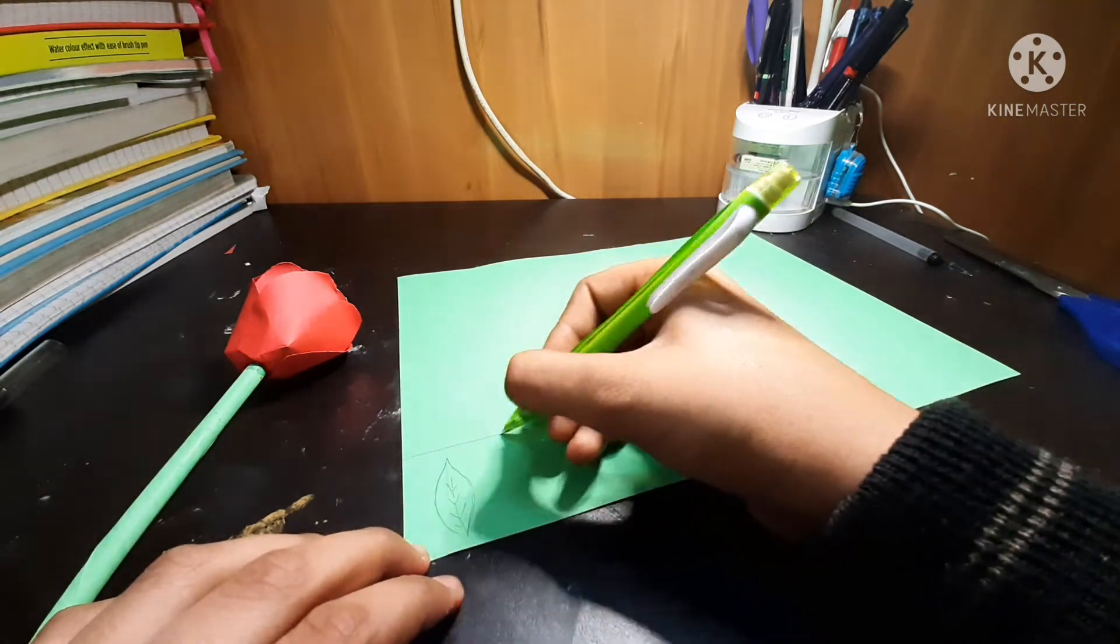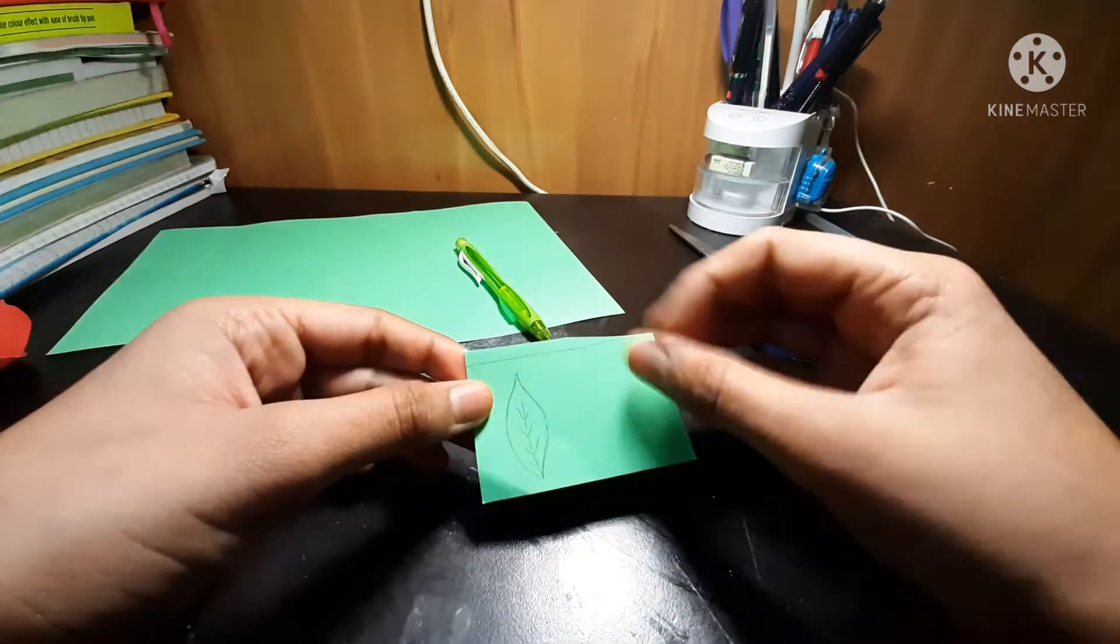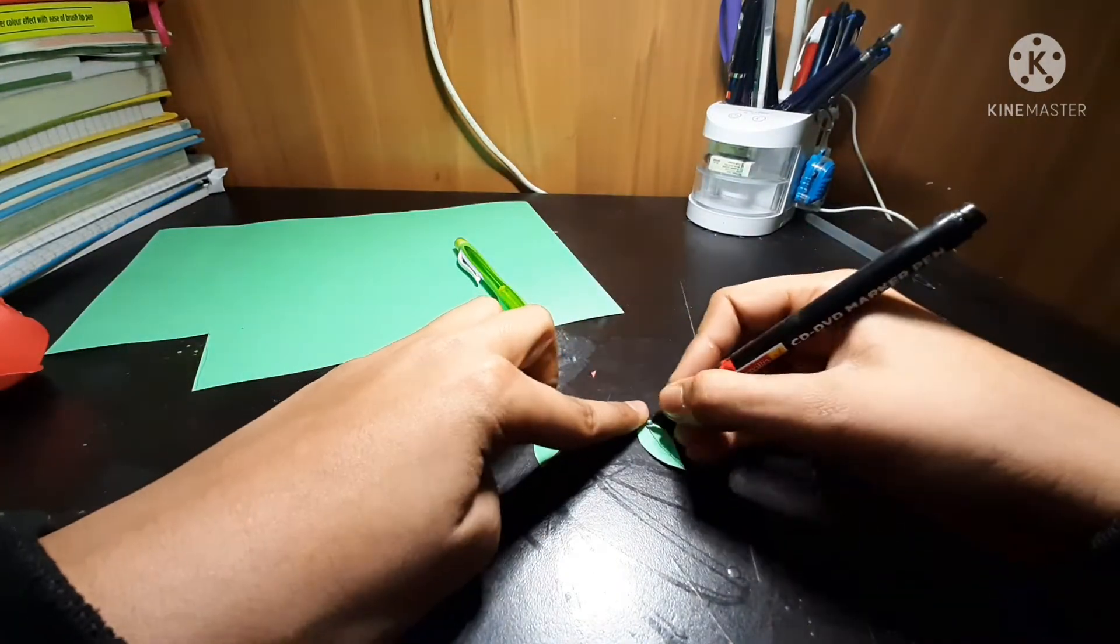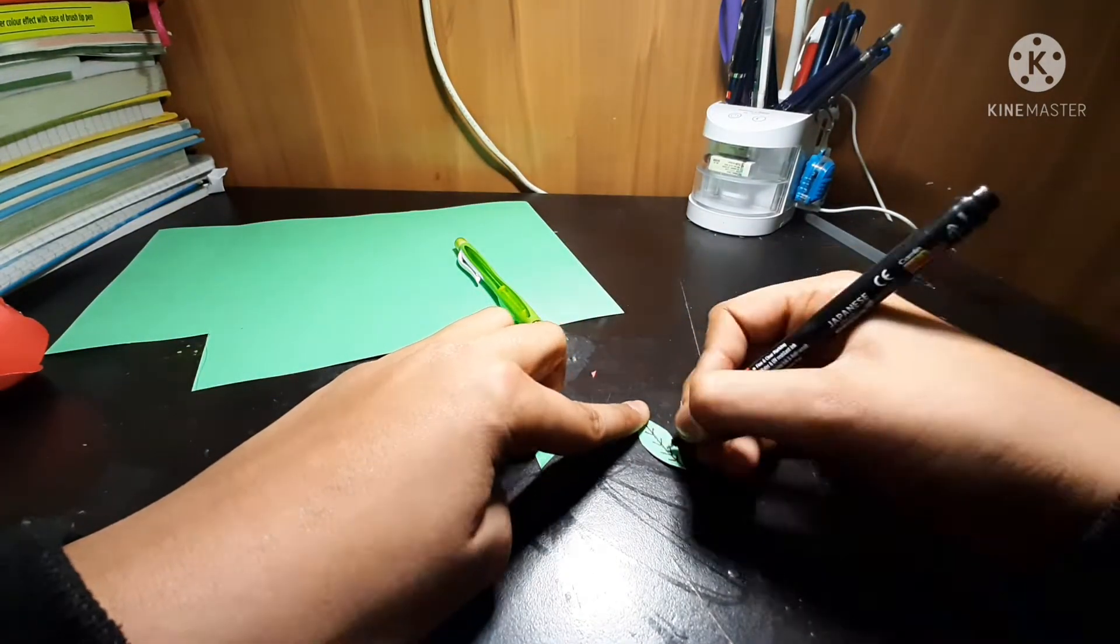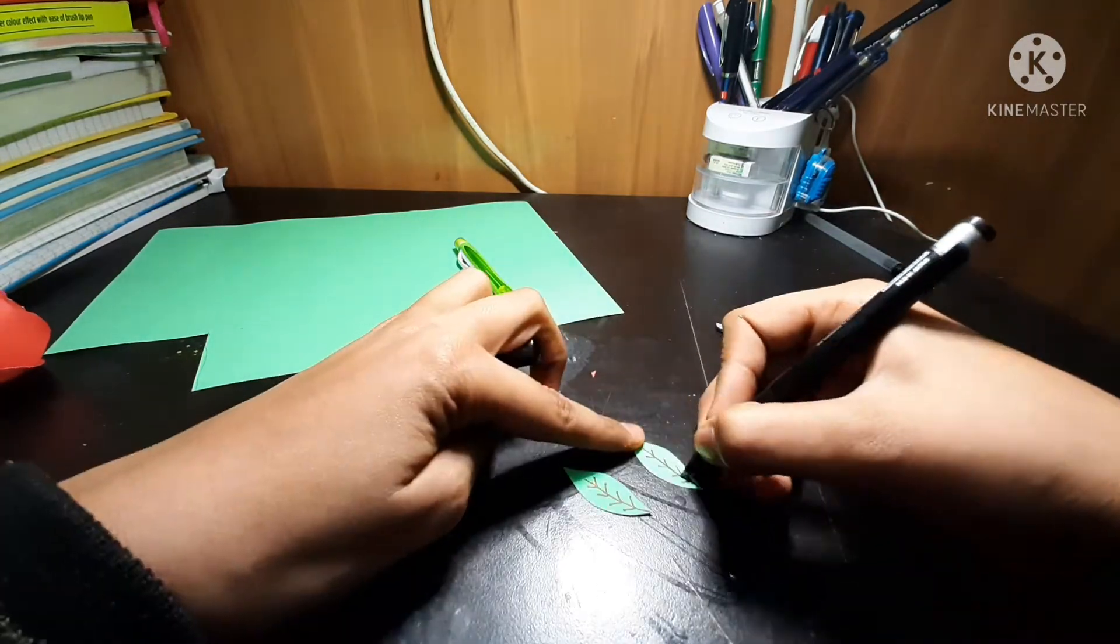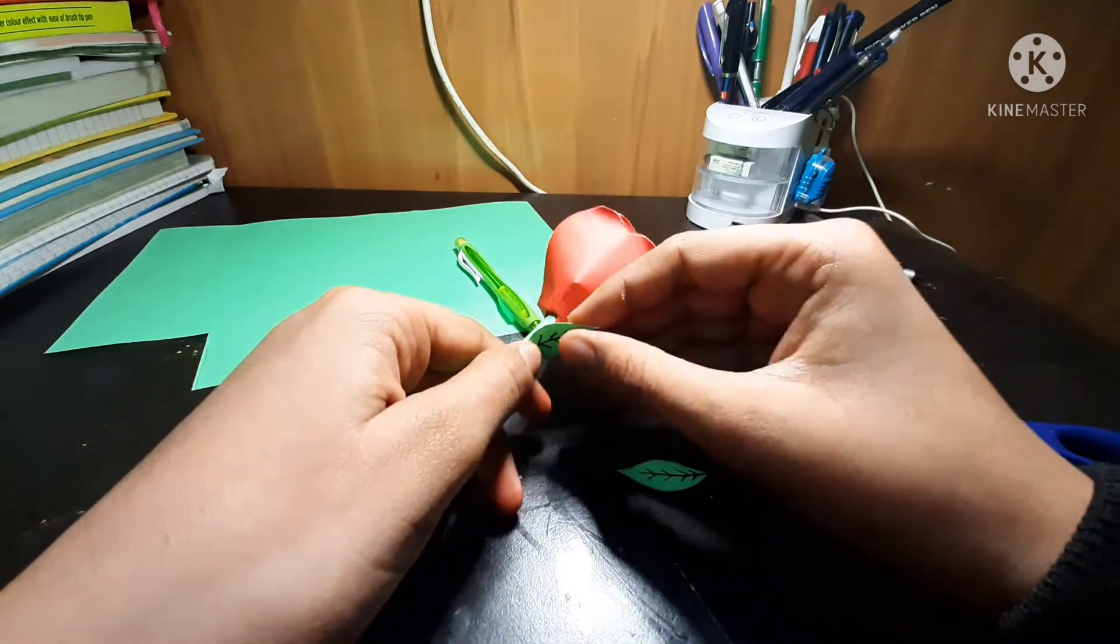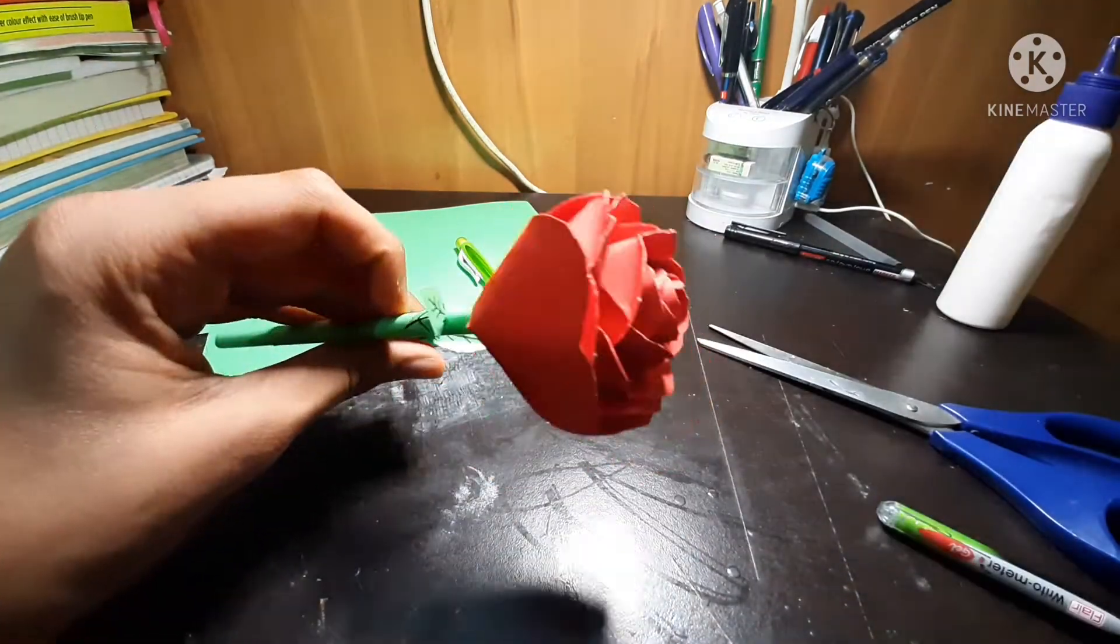But we also need leaves. I'll draw some leaves because leaves are an important part. They are the food kitchen, they prepare the food for the plant, so we will also need some leaves in the flower. I'll just fold it from the marker and paste it. Guys, for today only this much. Let's meet in the next video. Please comment in the comment box how was the flower and the steps to make it. Was it easy or difficult?